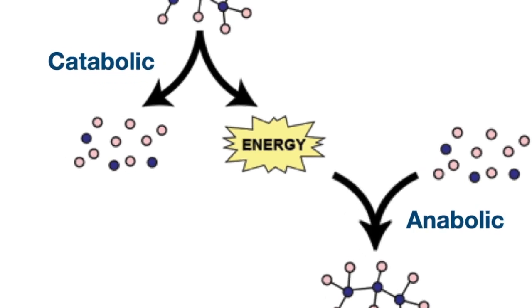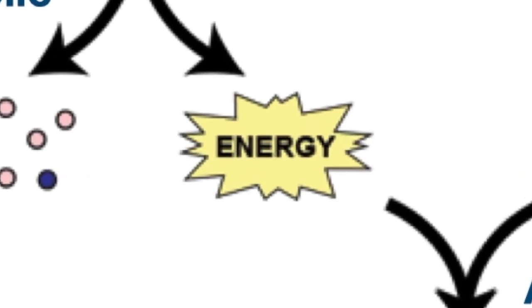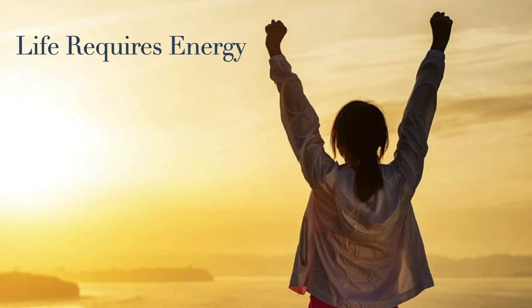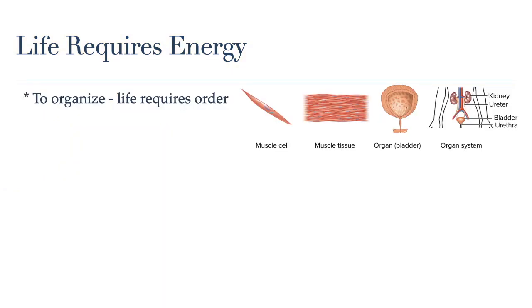So let's now talk about energy in living things. Life requires energy. In order to stay alive, cells need to continuously use energy. For example, life requires order, and energy is needed to create that order. Molecules and organelles are organized into cells, cells into tissues, tissues into organs, and organs into organ systems that keep the organism alive.